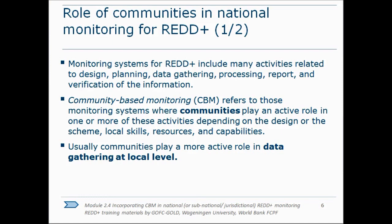But what we're primarily talking about is gathering data at base level — gathering field data. This could be data on carbon stocks and changing carbon stocks, but it could also be data on the reasons why carbon stocks are increasing or decreasing, on non-carbon benefits of various kinds, and other things that communities would like to monitor.